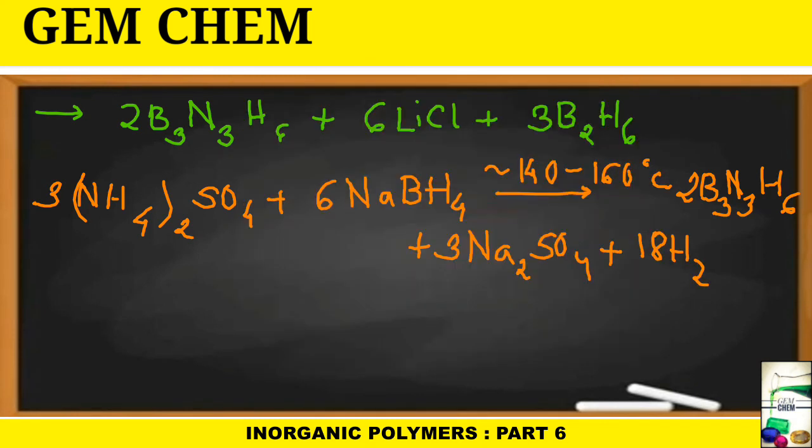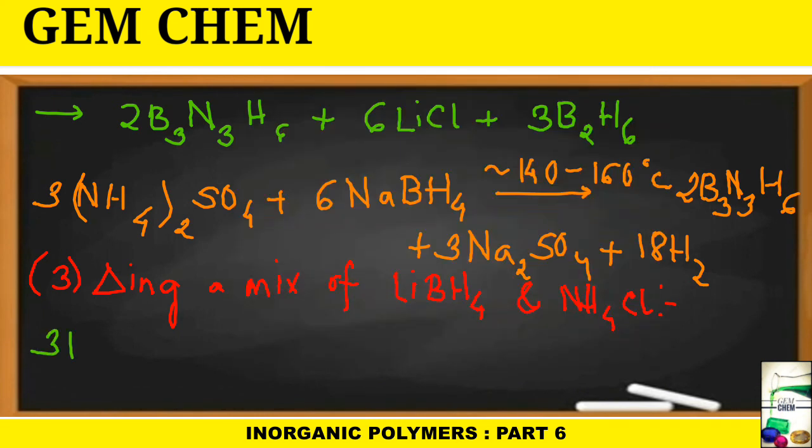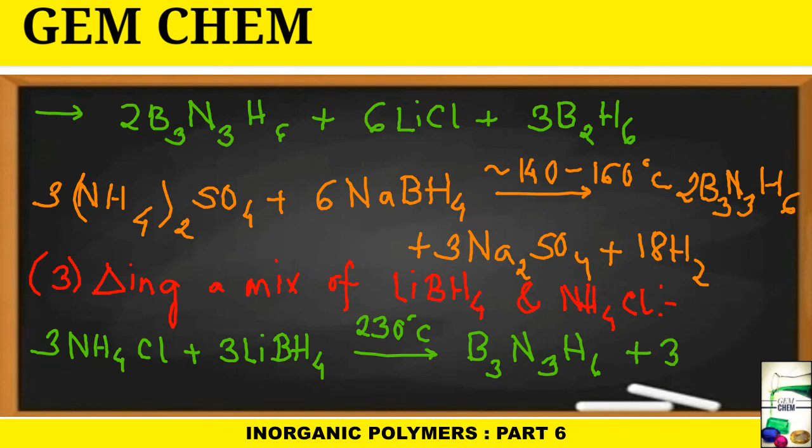The last method we will consider is heating a mixture of LiBH₄ and NH₄Cl. When these two are heated to 230°C, borazine forms directly and the yield is up to 30%. So here 3NH₄Cl plus 3LiBH₄ produces at about 230°C B₃N₃H₆ plus 3LiCl plus 9 hydrogen. In this case, our yield is near about 30%. This was the last method of preparing borazine.